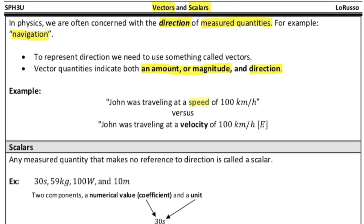This has a magnitude of 100 and a unit of kilometers per hour versus John was traveling at a velocity of 100 kilometers per hour, but going east. In everyday language, the concept of velocity and speed are used interchangeably.